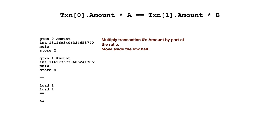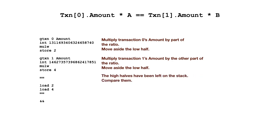So we do one multiplication, then move aside the low half — the last thing on the stack — and store that into scratch space at position two. Then we do the other multiplication, move aside the low half and store that at scratch space position four. We still have the high half of both of those multiplications left on the stack — compare them. Then bring back the low halves and compare them, and check that both halves were equal. And now we have the expression at the top expressed in Teal.